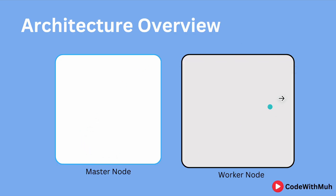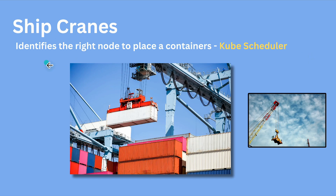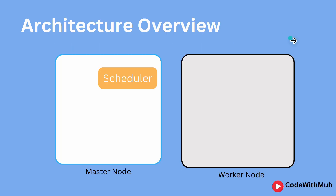Now let's talk about the key components of the master node. We know about ship cranes — when we load containers onto a cargo ship, we use ship cranes which identify where to put the container and on which cargo ship. Similarly, in Kubernetes we have the kube-scheduler in the master node, which decides when to add a new container onto a worker node.